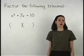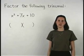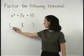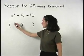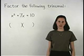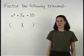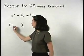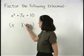So what goes inside the parentheses? Well, the first term in each binomial will be a factor of the x squared term. And since x squared factors as x times x, we use an x as the first term in each binomial.